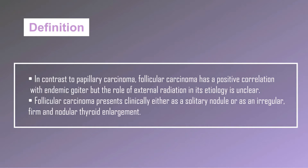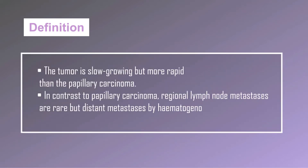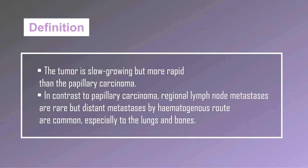Follicular carcinoma presents clinically either as a solitary nodule or as an irregular, firm, and nodular thyroid enlargement. The tumor is slow growing but more rapid than papillary carcinoma. In contrast to papillary carcinoma, regional lymph node metastases are rare, but distant metastases by hematogenous route are common, especially to the lungs and bones.